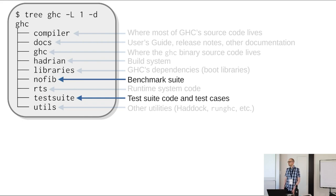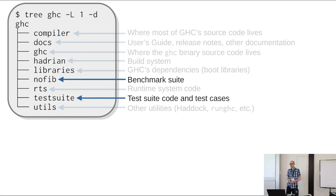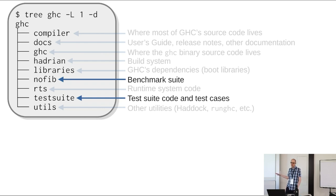NoFib is named because when designing a benchmark suite for GHC, they wanted something fancier than Fibonacci — 'no Fibonacci'. Somewhat ironically, NoFib today has a lot of microbenchmarks that don't quite stress test GHC the way large industrial codebases would. If you want to know how GHC affects large real-world codebases, NoFib isn't a great proxy, and there have been efforts to improve it.